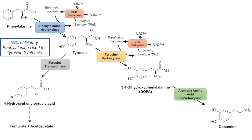Once we have DOPA, it can be decarboxylated by the enzyme aromatic amino acid decarboxylase. Decarboxylation is simply the removal of a CO2 group — the carboxylic acid group is removed from the dihydroxyphenylalanine, leaving us with dopamine. Aromatic amino acid decarboxylase requires vitamin B6, or pyridoxal phosphate, as a cofactor.